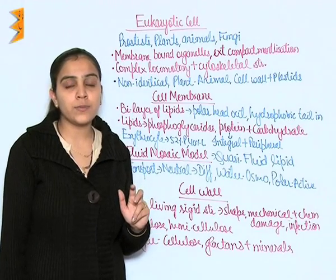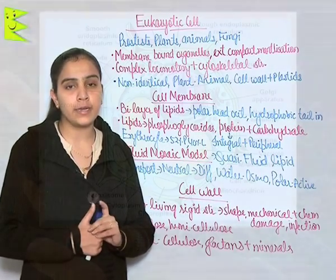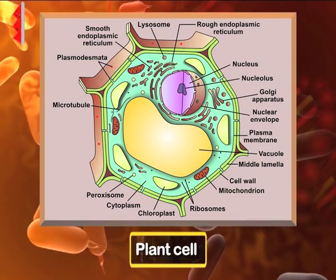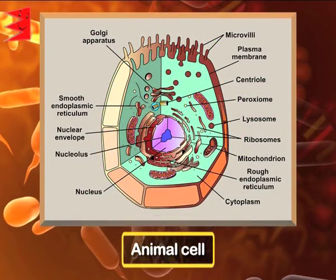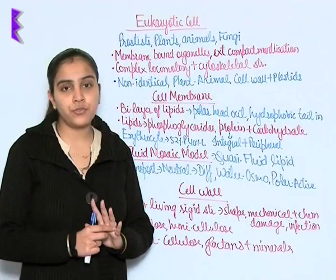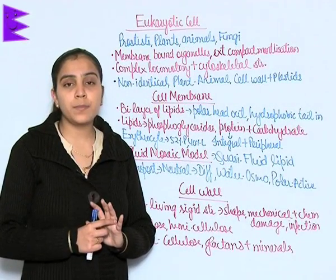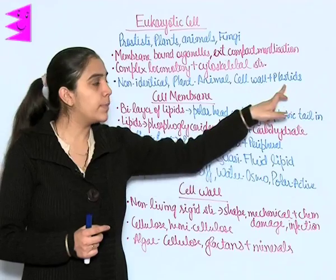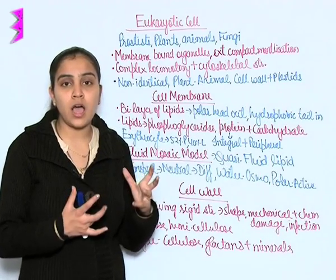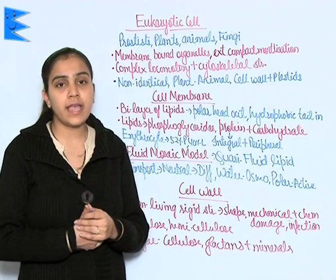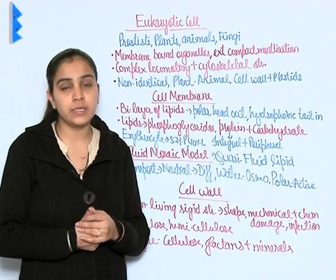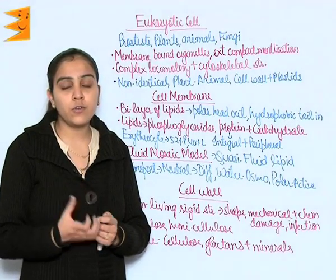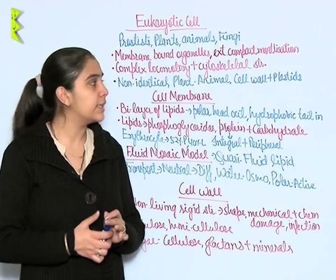You can see two types of eukaryotic cells in the diagram: the animal cell and the plant cell. Eukaryotic cells are not similar — they are different. The plant cell has a cell wall, plastids, and a large vacuole, whereas animal cells do not have these. Animal cells have a centriole, which is absent in plant cells.